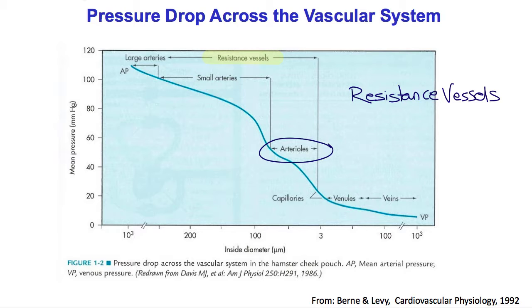They are so called not only because this is the site of the greatest pressure drop, but also because these vessels are most able to control the pressure drop by varying their diameter, because these vessels have a large proportion of smooth muscle in their media.